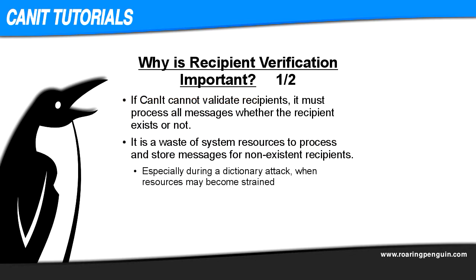We need to validate recipients for two main reasons. When CANET doesn't know which recipients are invalid, it has to scan and filter mail for all recipient addresses whether they exist or not. This means that CANET is creating streams, scanning, trapping, and processing mail for recipient addresses that don't exist at all. This is a waste of resources. If CANET can simply reject these messages, it doesn't need to waste time and storage dealing with useless messages.